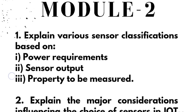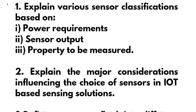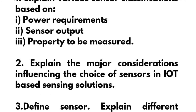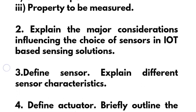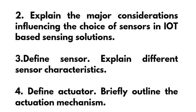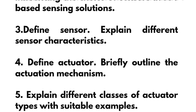In Module 2: explain various sensor classifications based on power requirements, sensor output, and the property to be measured. Next, explain the major considerations influencing the choice of sensors in IoT-based sensing solutions, and define a sensor and explain different sensor characteristics.